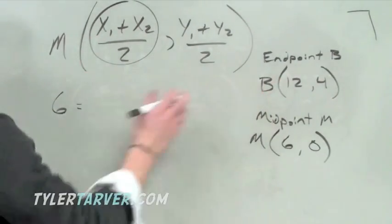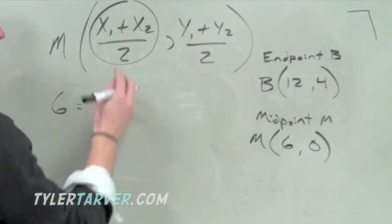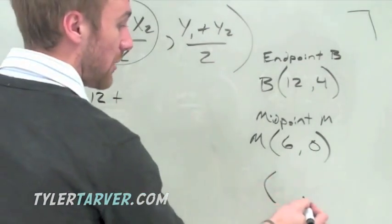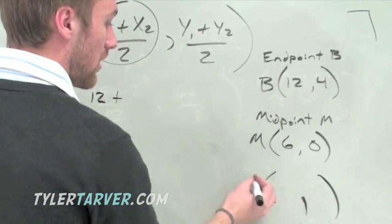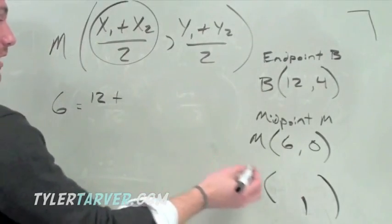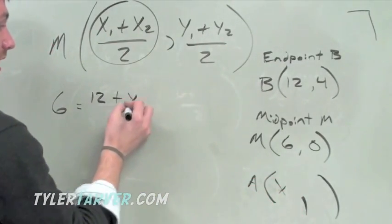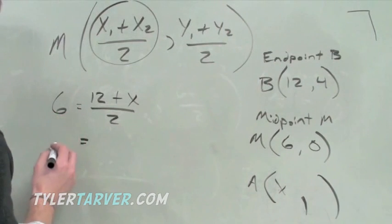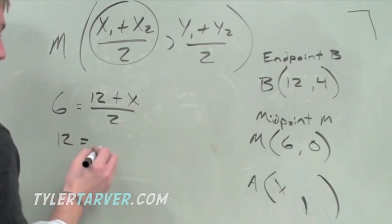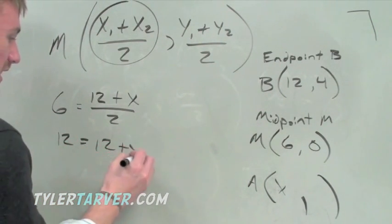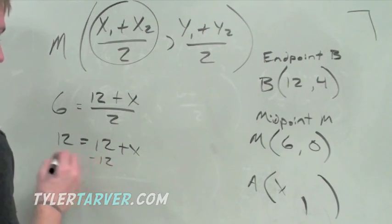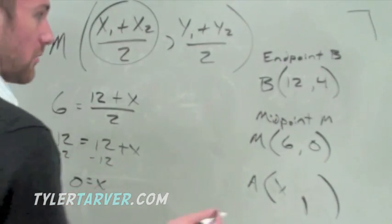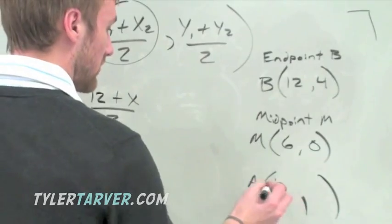Then we can plug in the one endpoint we do know, which is 12 plus the endpoint we want to find for A. That'll be our x, so we'll put it as x divided by 2. Now we just solve it. Multiply 2 on both sides, that'd be 12. 12 plus x. We subtract 12. Our x is going to be 0.